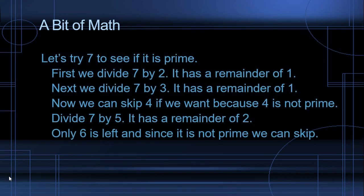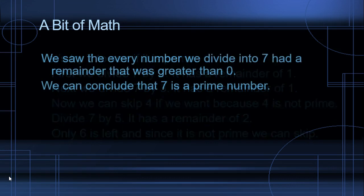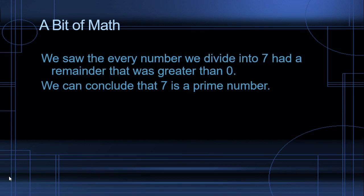Let's try 7 to see if it's prime. First, we divide 7 by 2. It has a remainder of 1. Next, we divide 7 by 3. It has a remainder of 1. We can skip 4 if we want, because 4 is not prime. Divide 7 by 5, it has a remainder of 2. Only 6 is left, and since that's not prime, we can skip dividing it. We saw that every number we divided into 7 had a remainder greater than 0. We can conclude that 7 is a prime number.